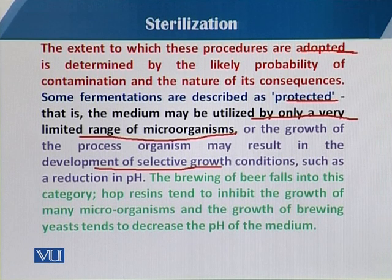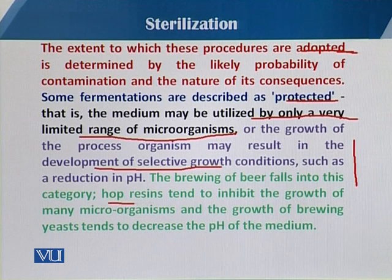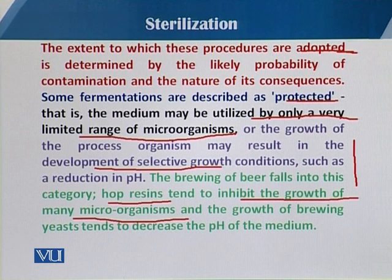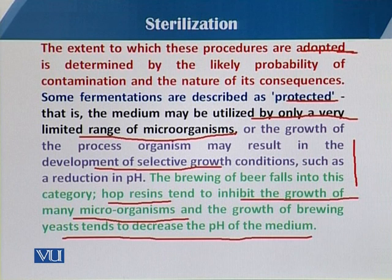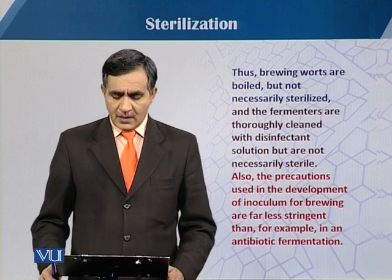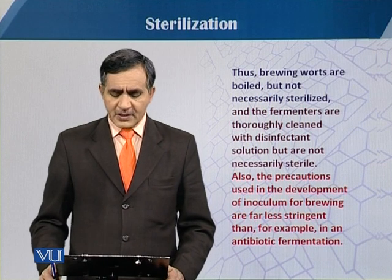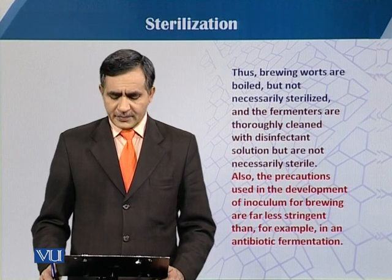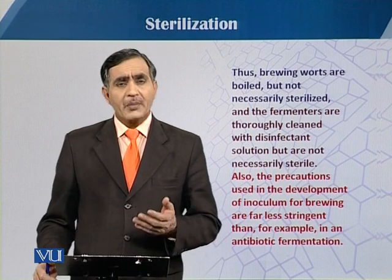Selective growth conditions for desired organisms can be established in terms of pH, nutrients, and other conditions. For example, in brewing beer, the presence of hops tends to inhibit the growth of many microorganisms, and the growth of brewing yeast tends to decrease the pH of the medium. In such cases, the brewing water is boiled but not necessarily sterilized, and fermenters are thoroughly cleaned with disinfectants but not fully sterilized.